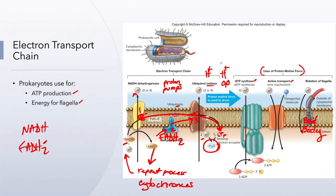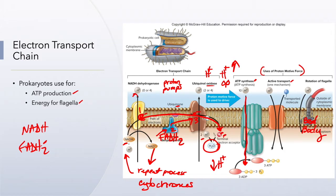Now that we have a high concentration gradient of protons on the outside of the membrane, they want to diffuse back across, but the phospholipid bilayer prevents them. ATP synthase provides a channel for these protons to diffuse back across the membrane. As they diffuse through ATP synthase, being charged, they give off energy, which ATP synthase harnesses to convert ADP into ATP. So for every NADH dropped off, we can produce approximately three ATP.